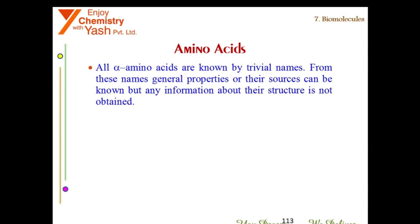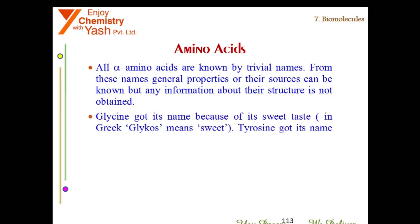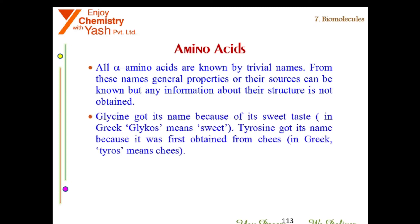All alpha amino acids are known by their trivial names. From these names, general properties or their sources can be known, but no structural information is obtained. For example, glycine got its name because of its sweet taste — in Greek, 'glycos' means sweet. Tyrosine got its name because it was first obtained from cheese — in Greek, 'tyros' means cheese.